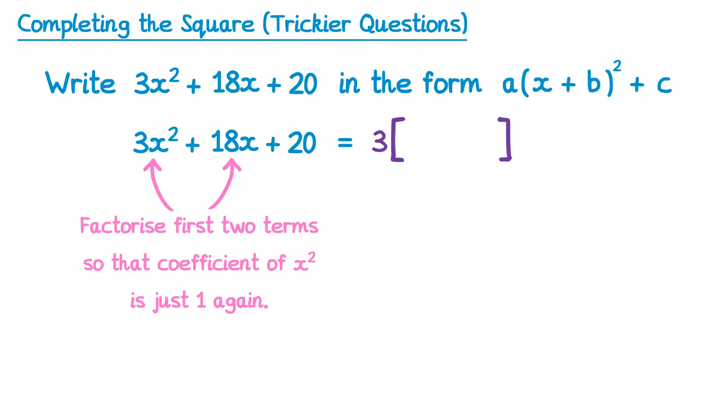So now we need to decide what would we multiply this 3 by to get 3x squared plus 18x, and that would be x squared, and then plus 6x, since 3 times x squared is 3x squared, and 3 times 6x is 18x. So we've now managed to factorise the first two terms, and you'll notice the coefficient of x squared inside the bracket is 1. There's also this term at the end though, the plus 20, and we need to still write that.